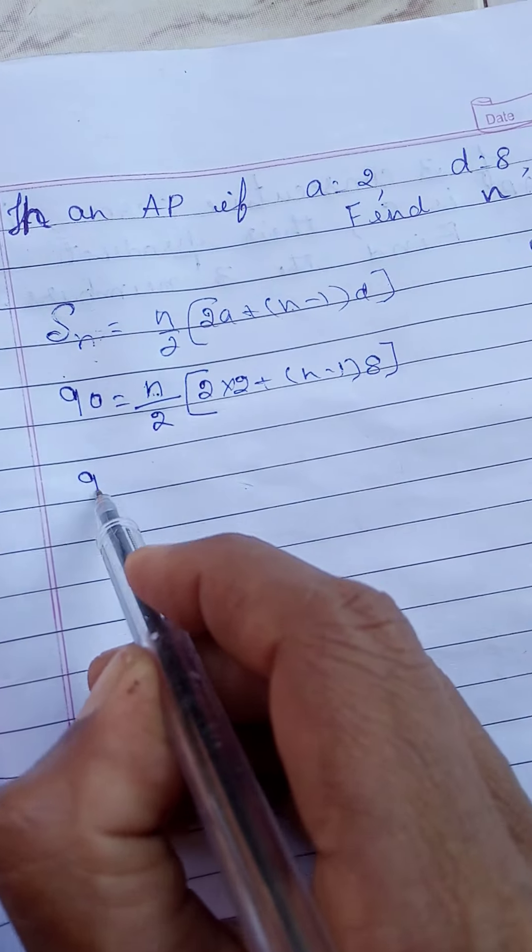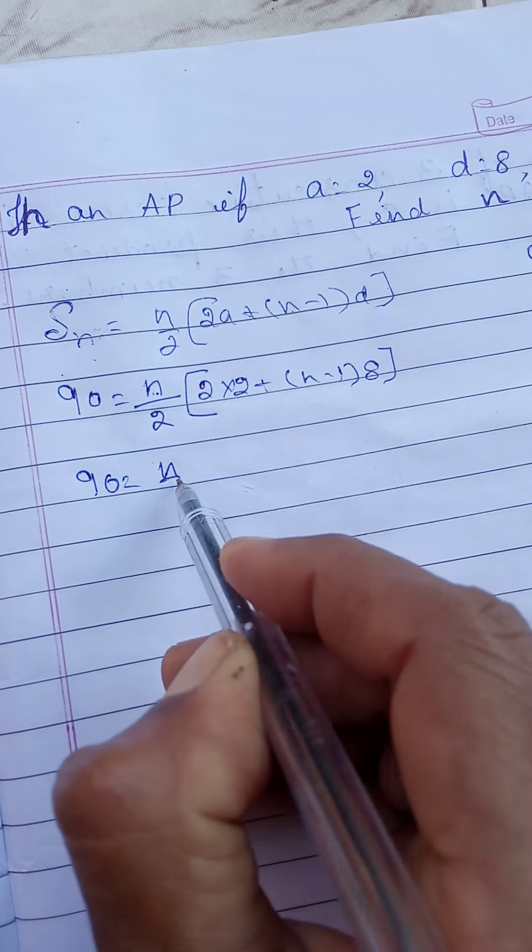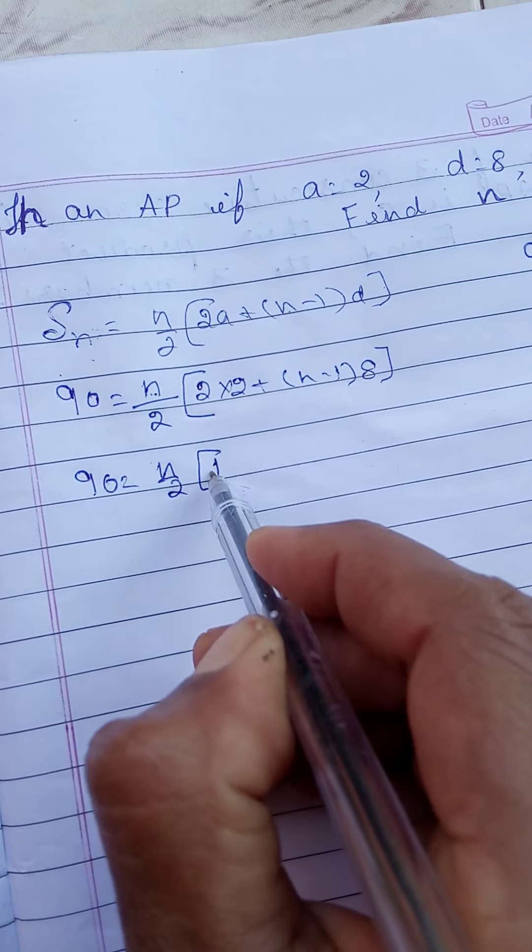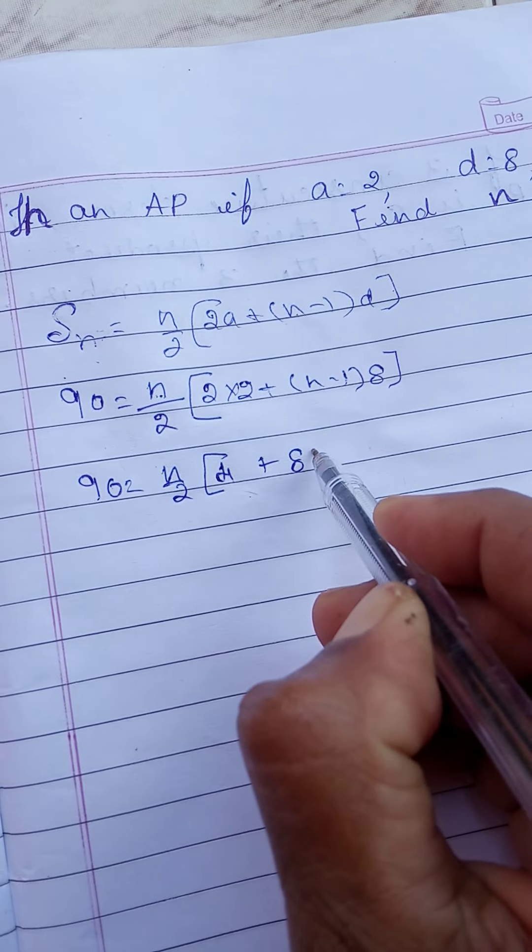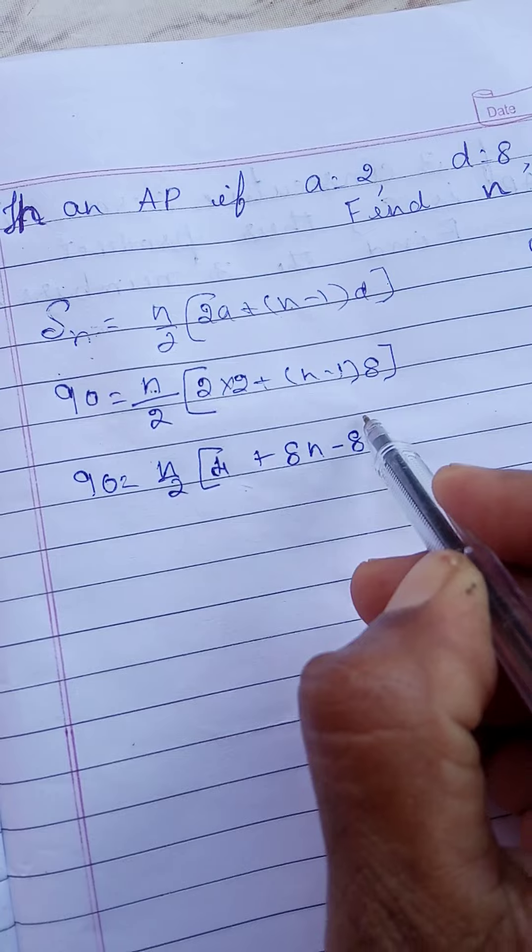Therefore, 90 is equal to n by 2 into 2 is 4, 4 plus 8 into n, 8n minus 8, 8 once is 8.